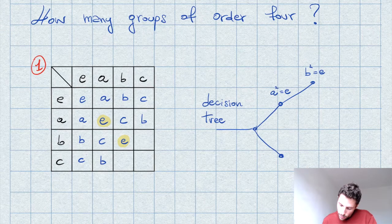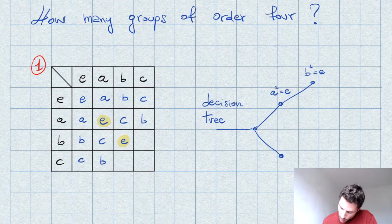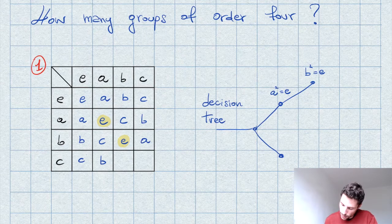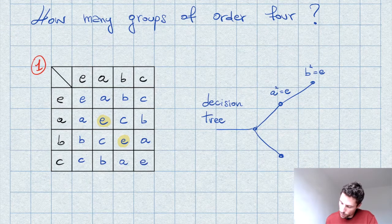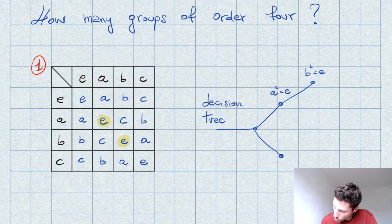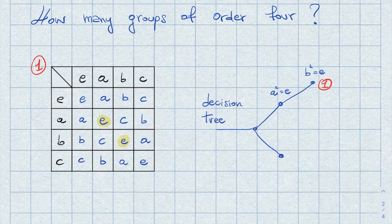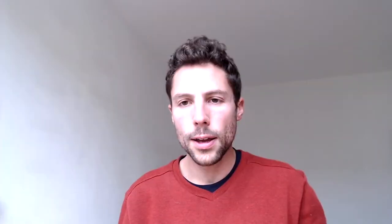With B squared equal to E, there are no other possibilities than filling in A, and similarly A and E in the remaining spots. So this is group number one.